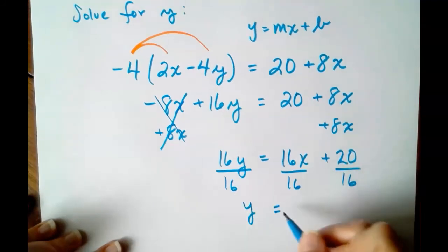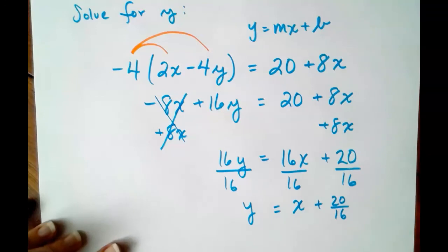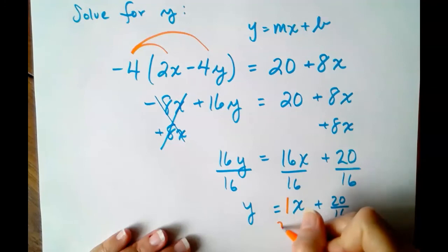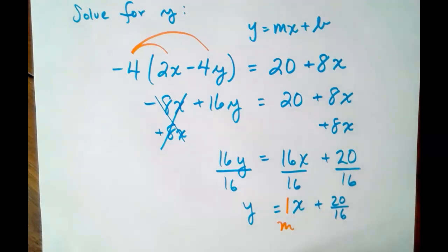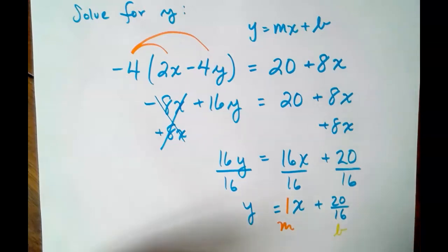Y equals 1X plus 20 over 16. So we have a slope of 1 and a Y intercept of 20 over 16, which you could simplify by 4s if you so choose. So solving for Y in terms of X, that's the first section of chapter 4.